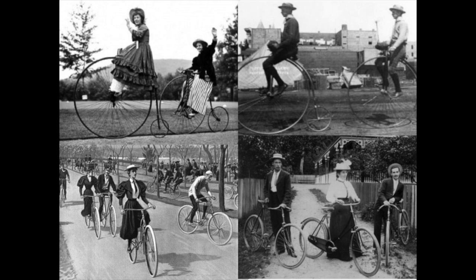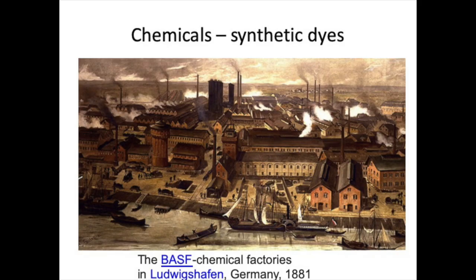The rapid expansion of telegraph lines around the world, including across the Atlantic Ocean, further fueled the demand for rubber from the Congo and other regions. Chemicals were also used to make synthetic dyes. Colorful textiles could now be produced cheaply, and the working class could now afford clothes that were not the traditional drab-colored ones of the past. Army uniforms became cheaper as well.